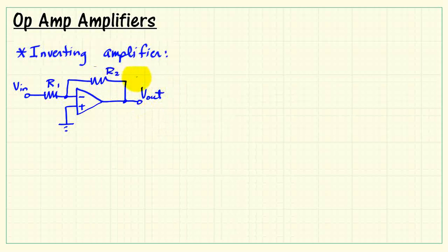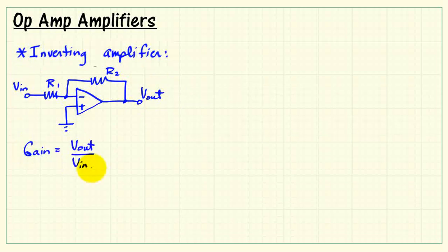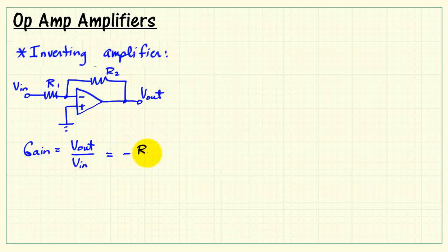I'll call that R2. The output of the amplifier is Vout. The amplifier gain is the ratio of the output to the input voltages, and it's only in terms of the resistor values. It's minus R2 divided by R1.